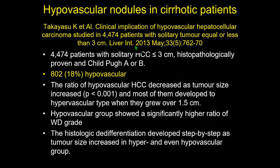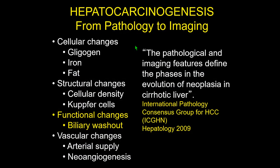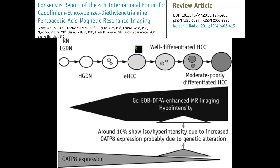Up to 18-20% of HCC are hypovascular, so we cannot make a correct diagnosis in these patients with dynamic imaging alone. This is important because the number of tumors determines patient management. That is why it is important to use liver-specific MR contrast agents and look for biliary washout in the hepatobiliary phase.